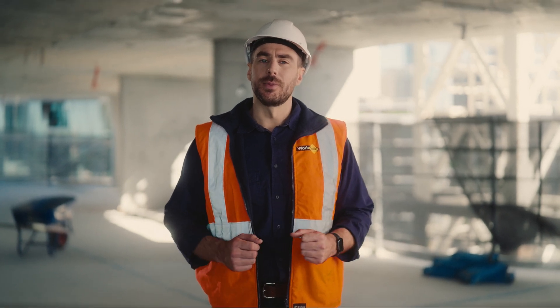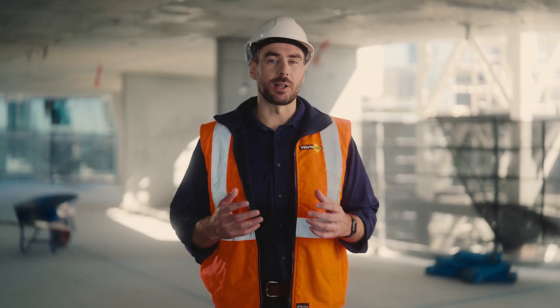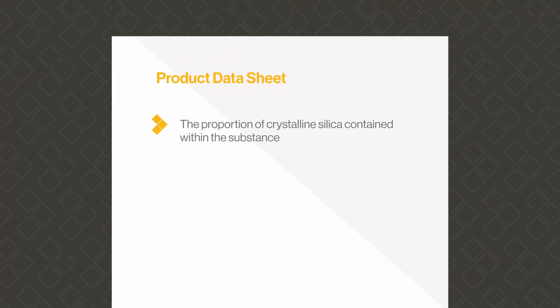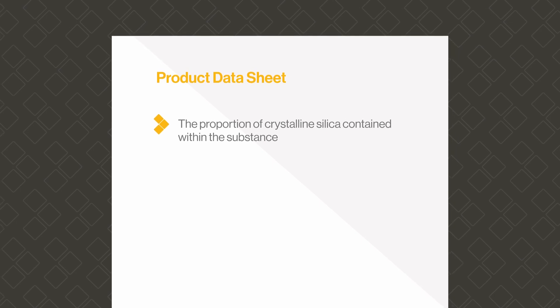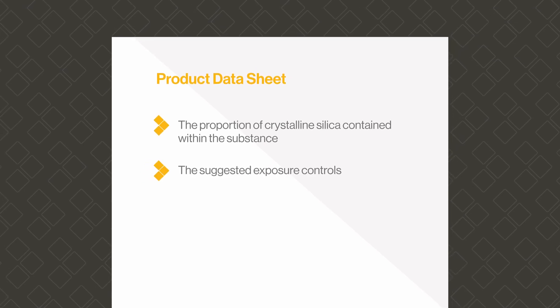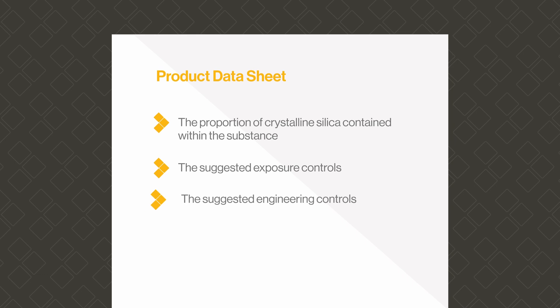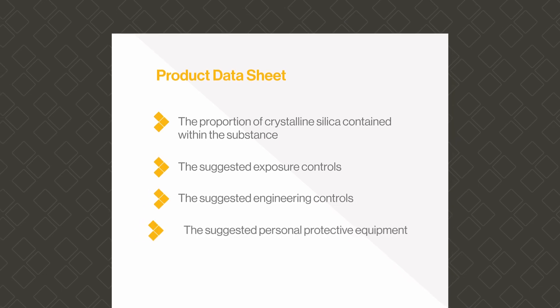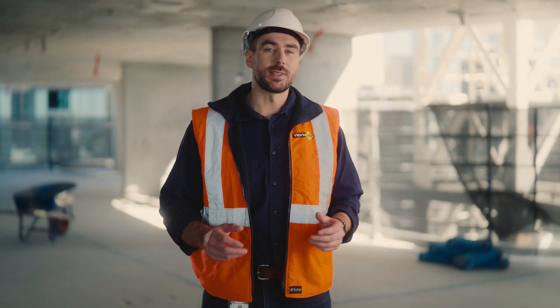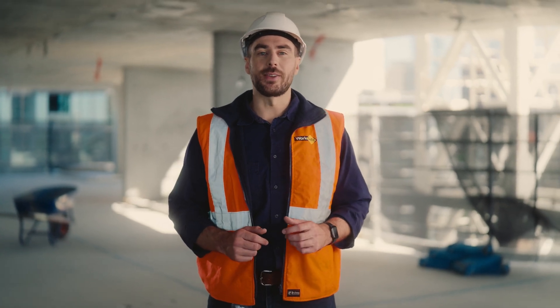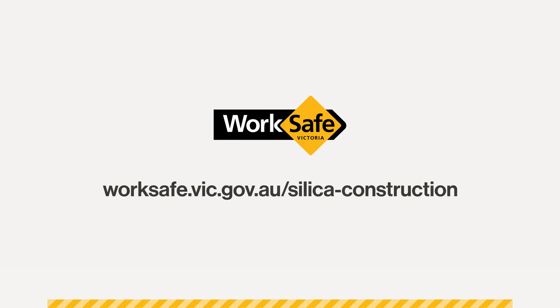Or if you work with a crystalline silica substance, you can review a product data sheet from the manufacturer or supplier and find information including the proportion of crystalline silica contained within the substance, the suggested exposure controls, the suggested engineering controls, and the suggested personal protective equipment. For further information or guidance on hazard identification, you can visit the WorkSafe website.